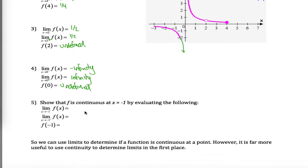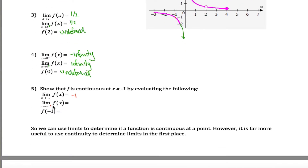Finally, it says show continuity at x equals negative 1 — so I'm talking about this point right here. It looks like my function is continuous at that point — it doesn't jump or anything. And we can verify that. The limit as x approaches negative 1 from the negative side: it looks like the height would be about negative 1. From the positive side, the height is also negative 1. And f of negative 1 is negative 1. All the same, so it's continuous.